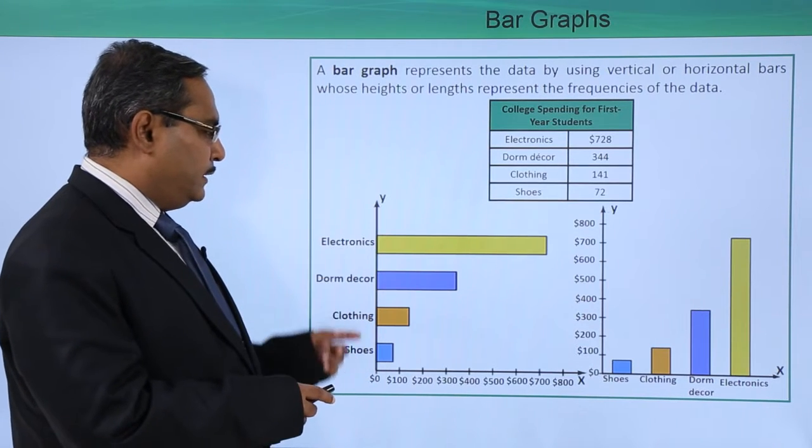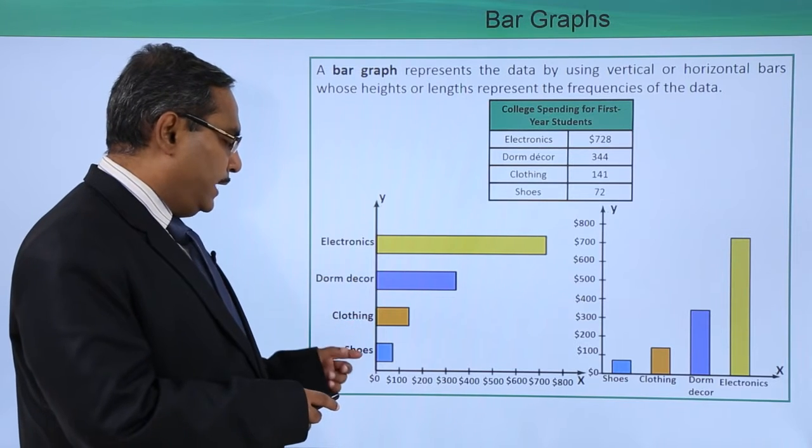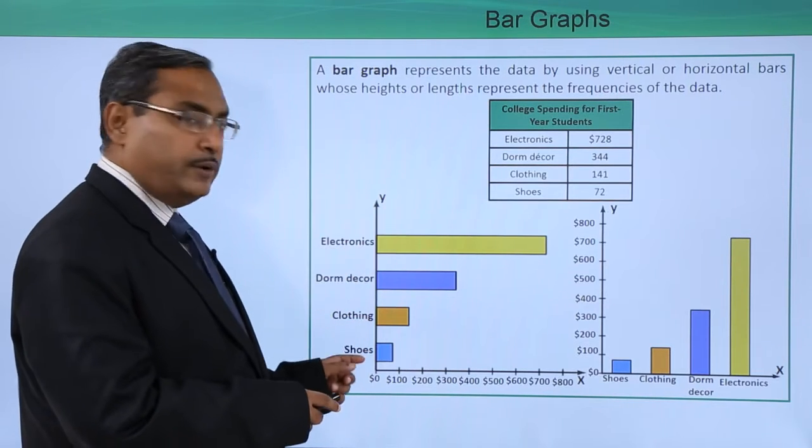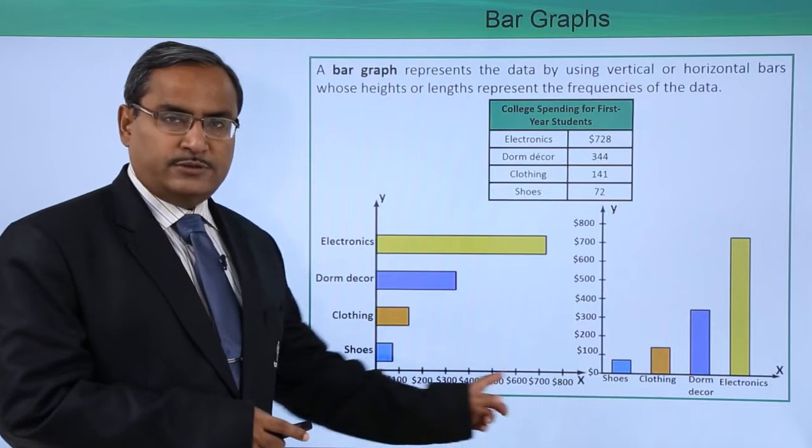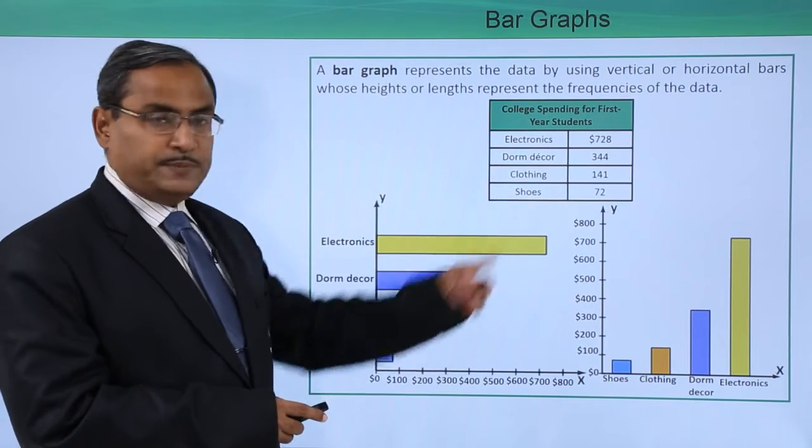Now we can express it in the form of electronics, dormitory decoration, clothing and shoes. The respective categories we are writing here, and along the x-axis we are plotting the respective expenses.